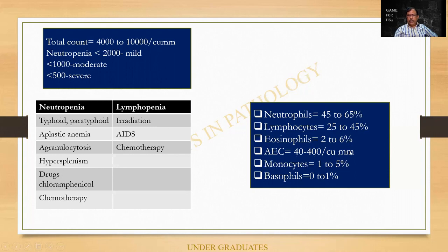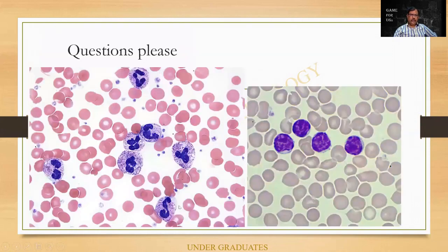There is a normal differential count you people should remember. Absolute eosinophil count is 40 to 400 per cubic millimeter. When asked for the absolute eosinophil count, students answer 2 to 6% — but 2 to 6% is the differential count. The absolute count is the absolute number. You can get a slide or chart like this. Obviously you can imagine the range of questions that can be asked: What is the method of counting? What is a normal neutrophil count? Mention conditions where it is increased or decreased. Where do you find immature cells? Can you draw a picture of the immature form?